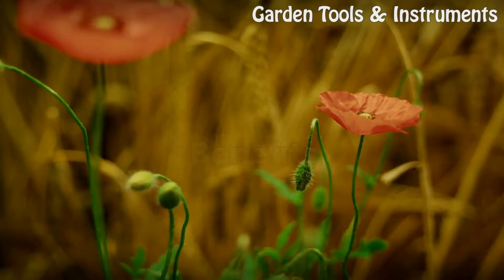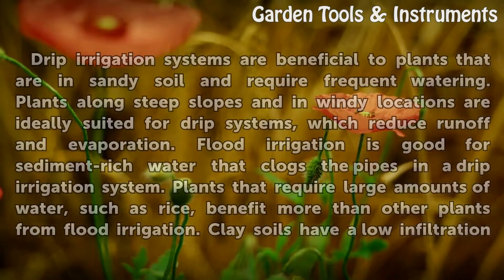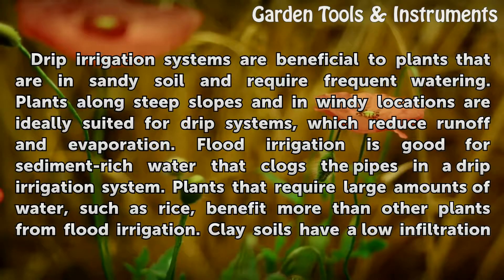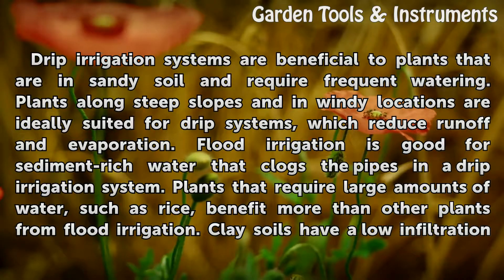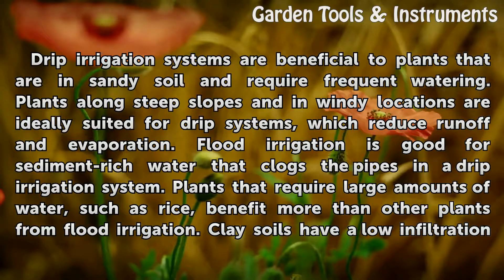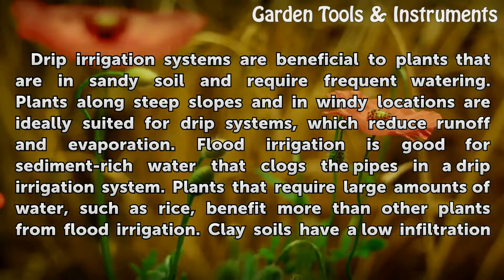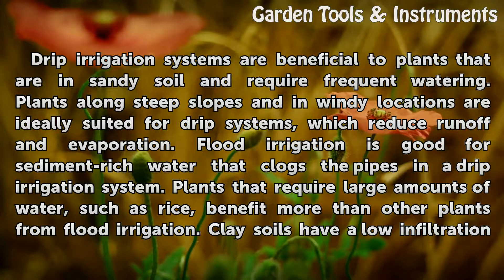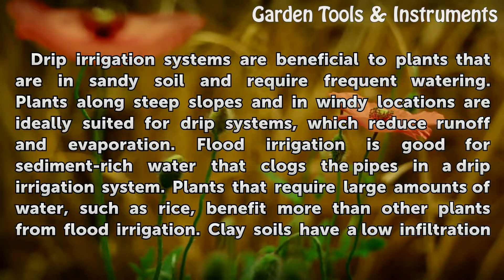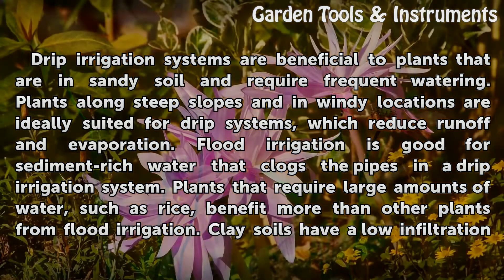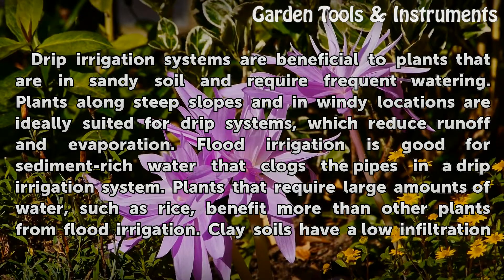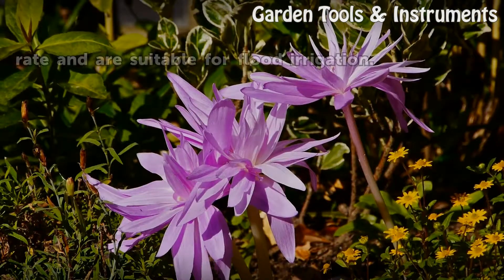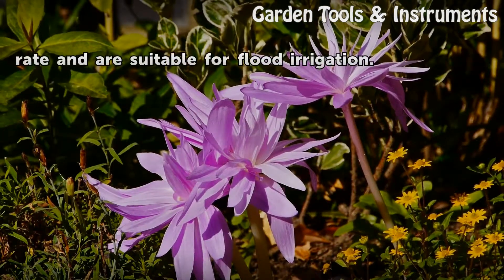Benefits. Drip irrigation systems are beneficial to plants that are in sandy soil and require frequent watering. Plants along steep slopes and in windy locations are ideally suited for drip systems, which reduce runoff and evaporation. Flood irrigation is good for sediment-rich water that clogs the pipes in a drip irrigation system. Plants that require large amounts of water, such as rice, benefit more than other plants from flood irrigation. Clay soils have a low infiltration rate and are suitable for flood irrigation.